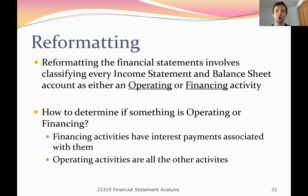If you look at the borrowings account on the liabilities, the bank has given us a loan. We have borrowings and we know we have to pay interest on that, so it's a financing activity. When we look at our profit and loss statement, sales revenue has no interest associated with it, so it's an operating activity. Interest expense or interest revenue, on the other hand, are classified as financing revenues and financing expenses.